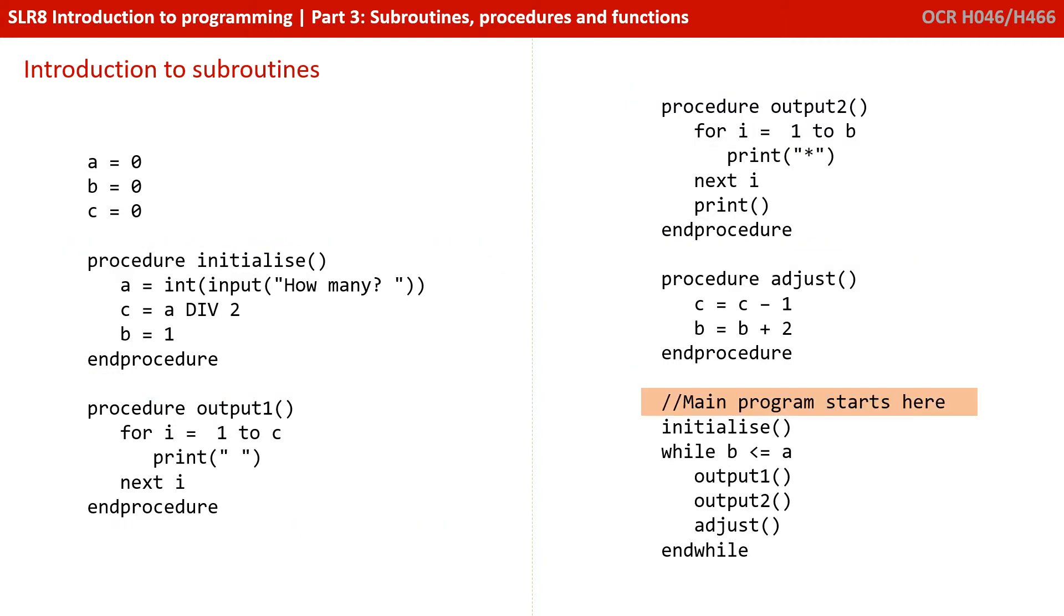You'll notice the actual main program starts down the bottom, and this is quite typical that the blocks of code, the subroutines, are written at the top of the program, and your main program starts towards the end. So when we actually run this program, it starts at this line, or strictly speaking this is a comment, so it will start at the next line.